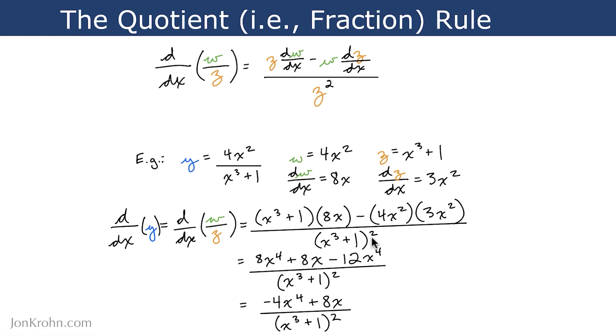All right, and then you can simplify the equation a bit by multiplying within the term. So x cubed plus 1 times 8x gives us 8x to the power of 4 plus 8x. And then we can also multiply here.